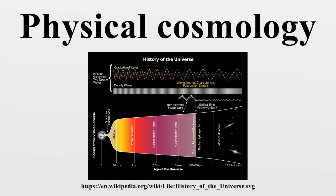This is because masses distributed throughout the universe gravitationally attract and move toward each other over time. However, he realized that his equations permitted the introduction of a constant term which could counteract the attractive force of gravity on the cosmic scale. Einstein published his first paper on relativistic cosmology in 1917, in which he added this cosmological constant to his field equations in order to force them to model a static universe.